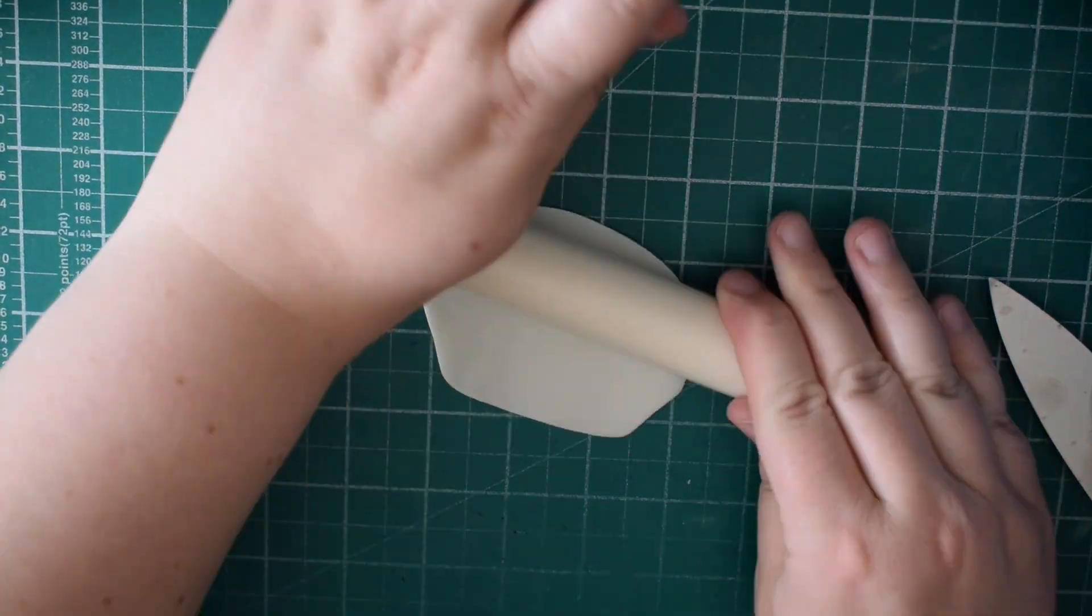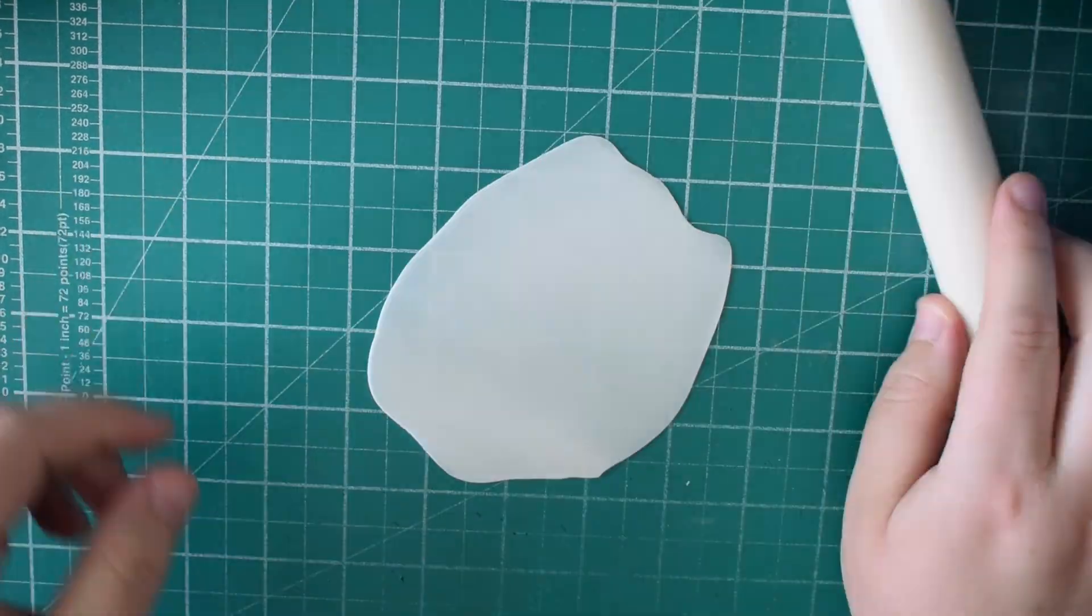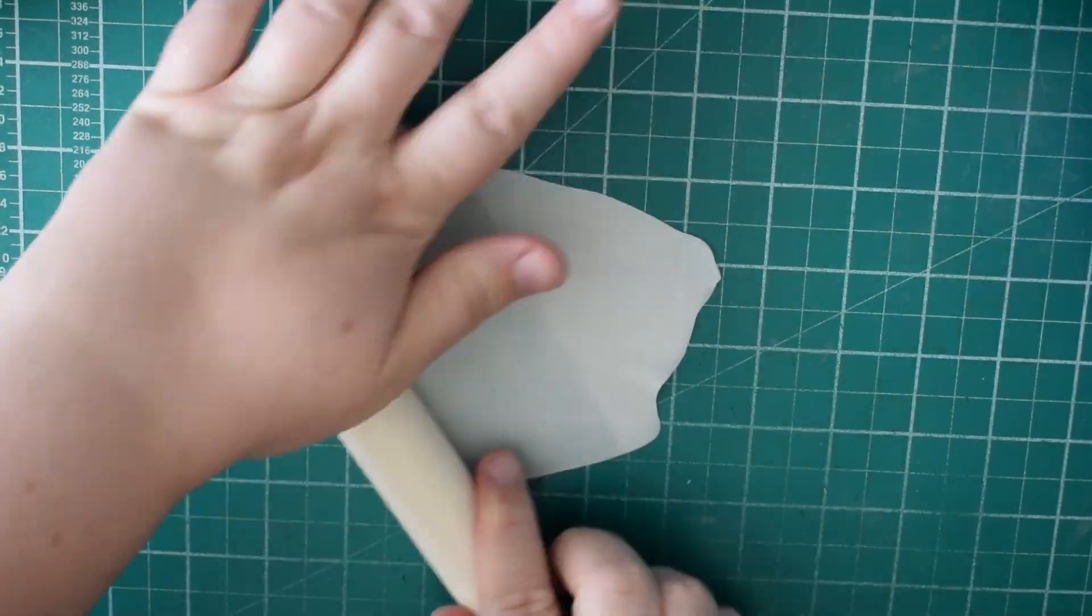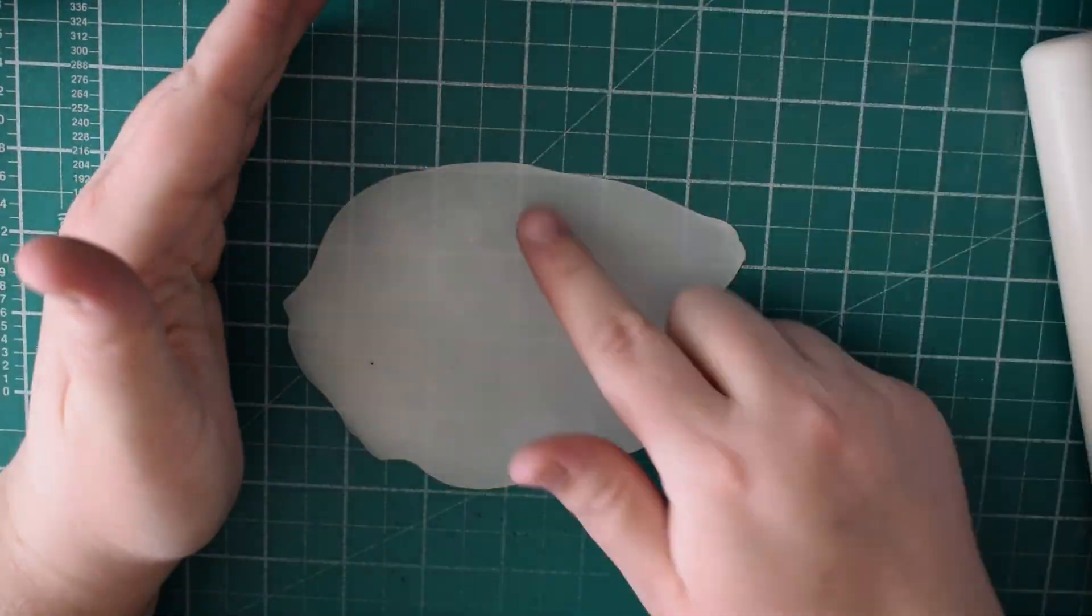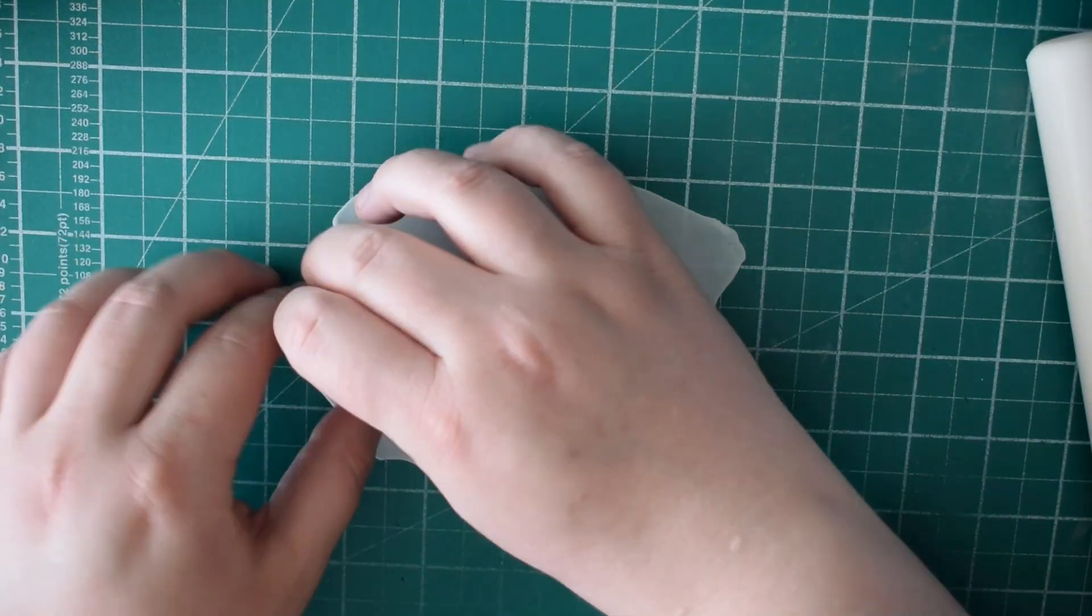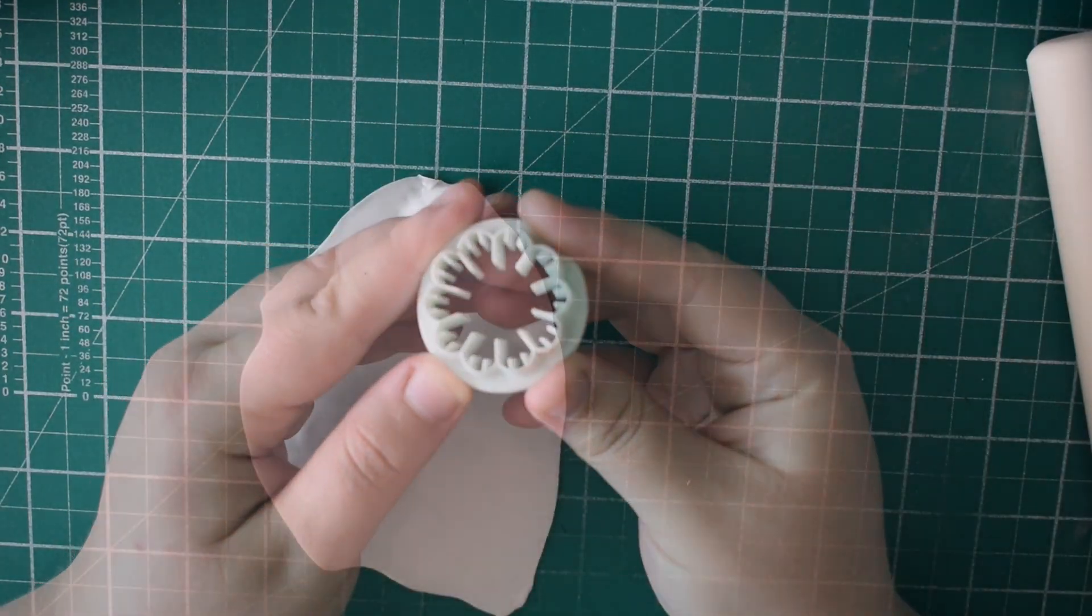So I've got some modeling paste, some flower and modeling paste. This one is Smartflex and you're just going to roll it out until you can see through the paste. It needs to be quite thin for these flowers.